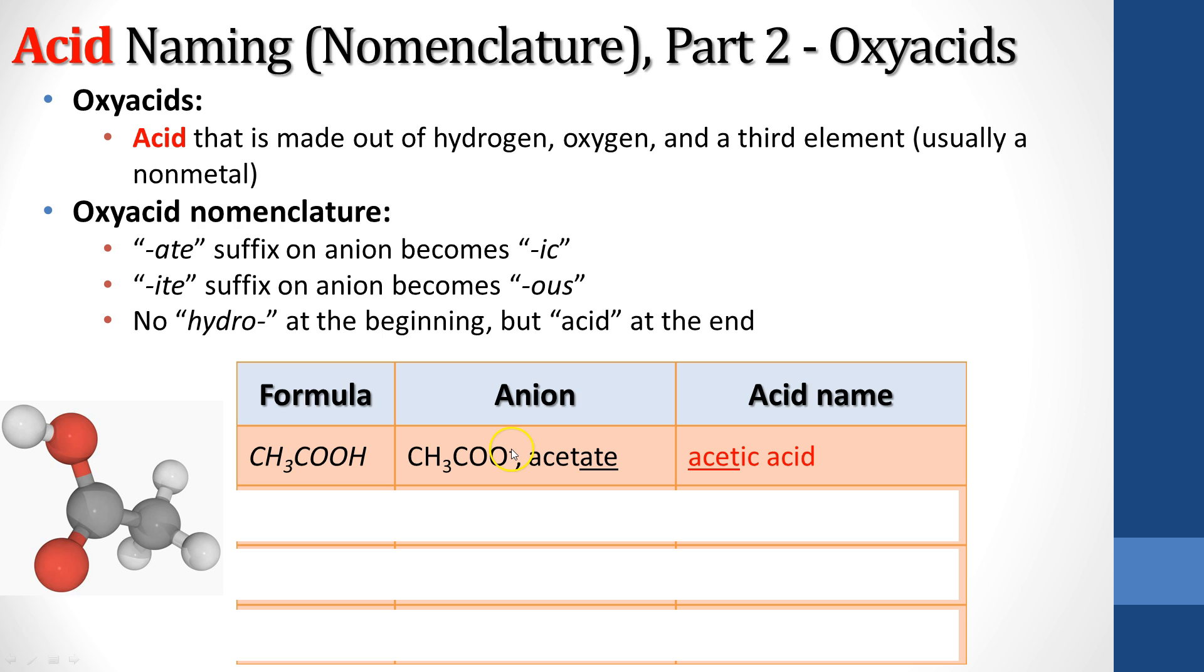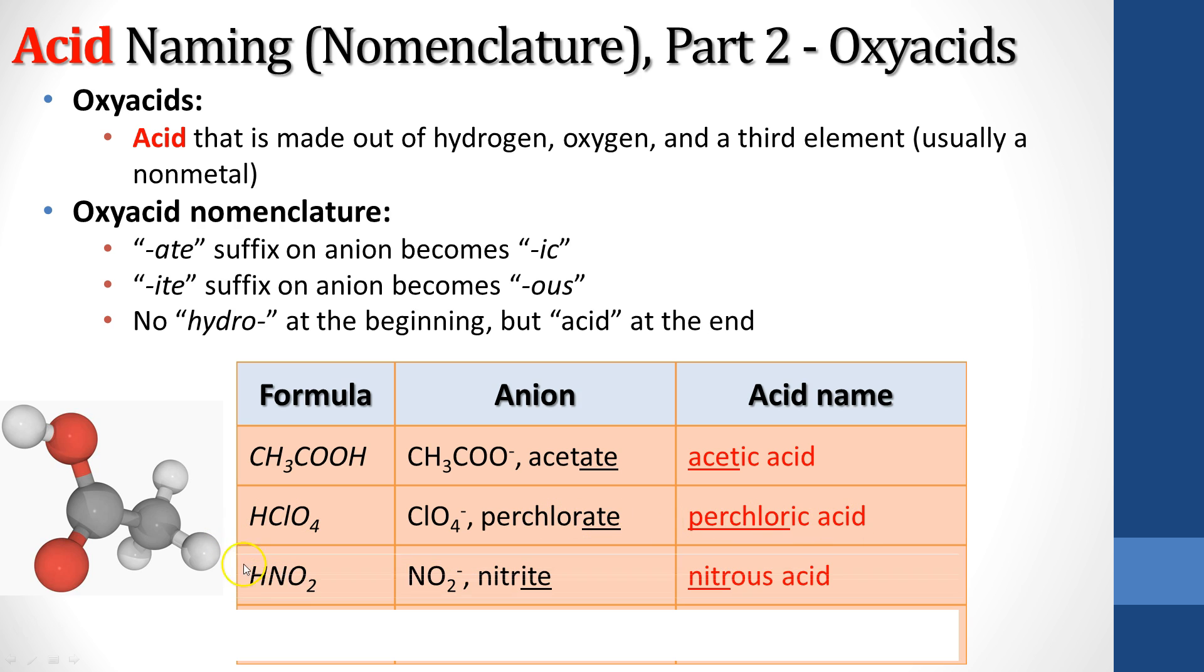CH3COOH, the anion there is the acetate. So to get to that, that ends -ate. So I'm going to put -ic at the end, so that becomes acetic acid. So acetic acid, that's vinegar. HClO4, my anion is perchlorate, and again it ends -ate, so that's going to be -ic. That's going to become perchloric acid. HNO2, this one ends -ite, as opposed to -ate. So -ite is going to become -ous, so this is going to become nitrous acid. Not to be confused with nitric acid, which would be if it was NO3, if that was nitrate. This one is nitrite, so it's nitrous.